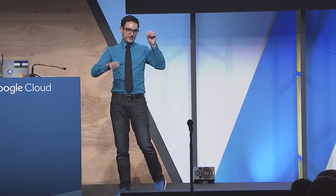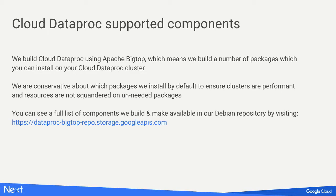The supported components — there's a lot you can run on Cloud Dataproc clusters. By default we install the most common packages: Spark, Hadoop, Hive, and Pig. We build a lot of the broader ecosystem in Bigtop. So if you wanted to install something like Zeppelin, it's actually in Bigtop and you can install it using an initialization action. The reason we keep it lean is we don't want to burden clusters with stuff people aren't going to use, taking up resources and making data processing slower.